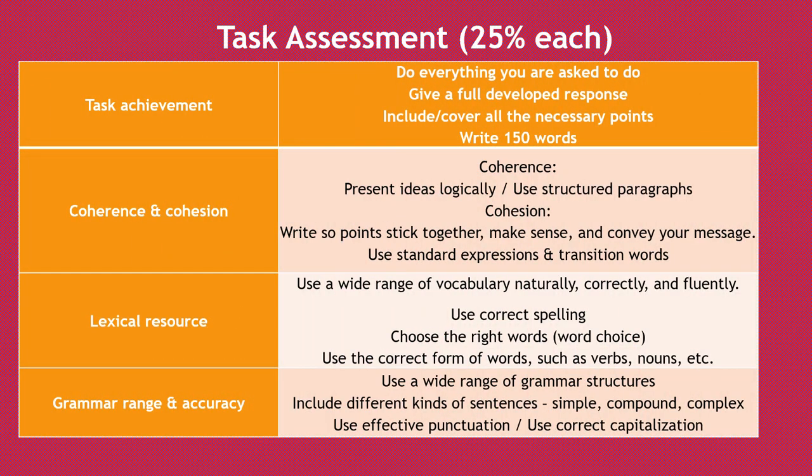Let's take a look at the task assessment, which is 25% each for four criteria. Task achievement means you should be writing what is asked in the question. Coherence and cohesion means making your ideas logical, putting them in structured paragraphs, and using standard expressions and transition words. Lexical resource covers your wide range of vocabulary — check your spellings. Grammar range and accuracy means using different kinds of sentences: simple, compound, and complex.